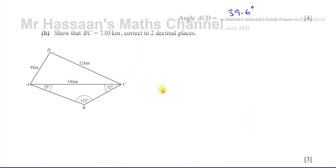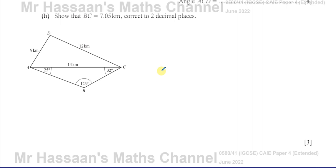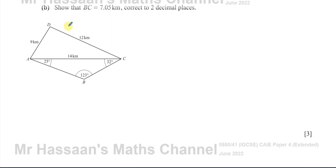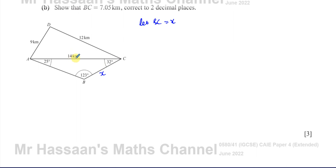For part B, it says show that BC equals 7.05 kilometers correct to two decimal places. This is a 'show that' question. The difference from a 'calculate' question is that you must show your steps 100% clearly. Because they give you the answer, you can't just write it down — you have to show your working and demonstrate it rounds to that value.